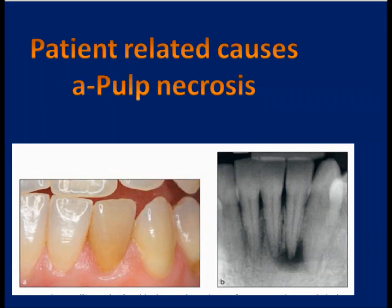Patient-related causes. A. Pulp necrosis: any irritation to the pulp may result in pulp necrosis and release of disintegration by-products. These may penetrate the dentinal tubules and discolor the surrounding dentine. The degree of discoloration depends on how long the tooth was necrotic. Treatment is by intracanal bleaching.